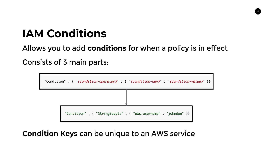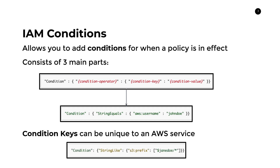This is what we'll be using in the next section when we talk about restricting access. To give an example from a different service: this condition uses string like with S3 prefix, and the value must contain 'Jane Doe' followed by a wildcard — basically giving access to S3 bucket paths where 'Jane Doe' appears and anything after the forward slash. Each service has its own IAM condition key syntax that you need to read up on.